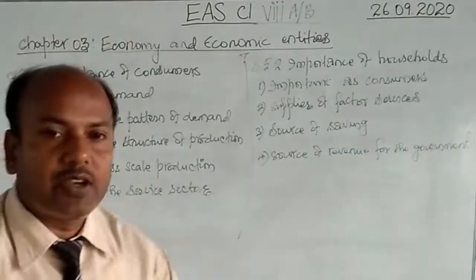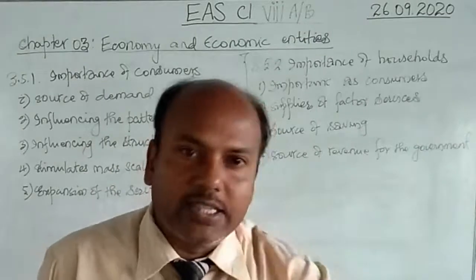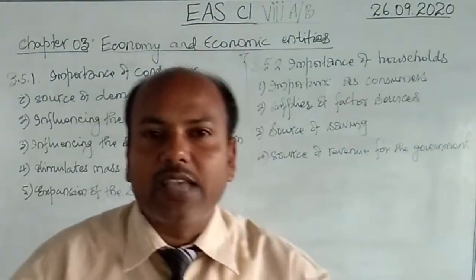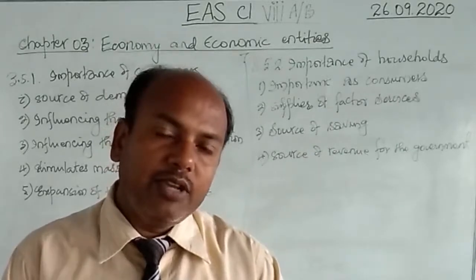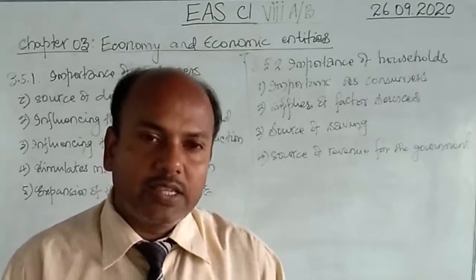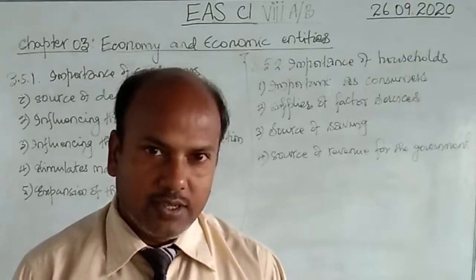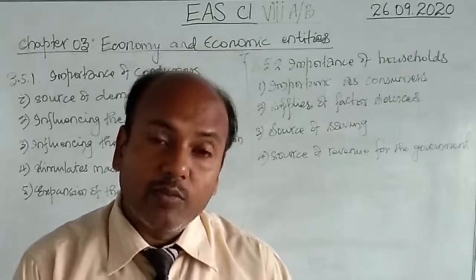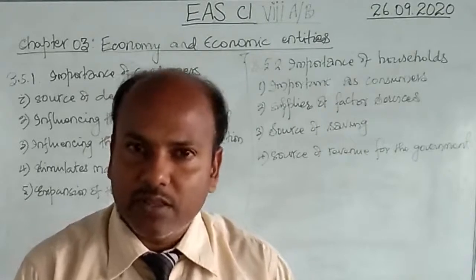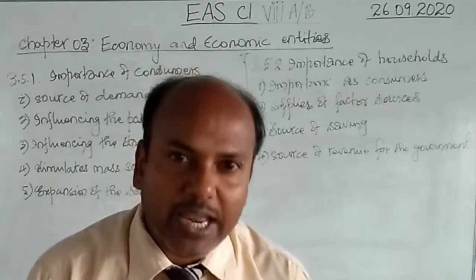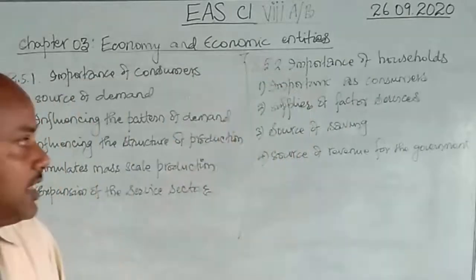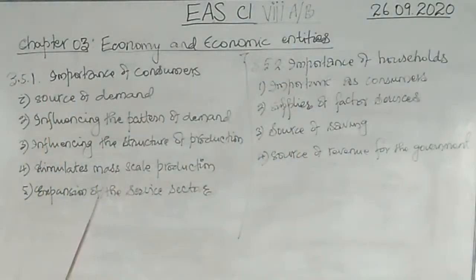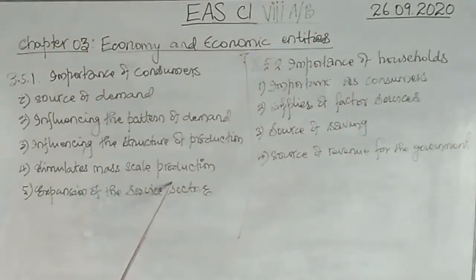The fourth point is the stimulus for mass scale production. It is because of consumers that something is produced on a large scale. If there are a large number of users, you need to produce in large amounts; if fewer users, you produce less. The more consumers there are, the bigger the production should be, and the fewer consumers of a particular commodity, the lesser the production. It is because of consumers that large scale production is feasible and possible.